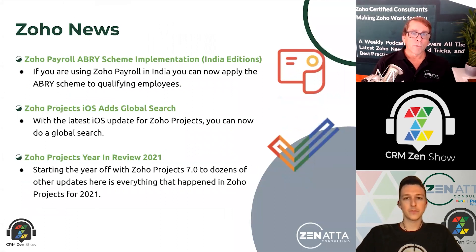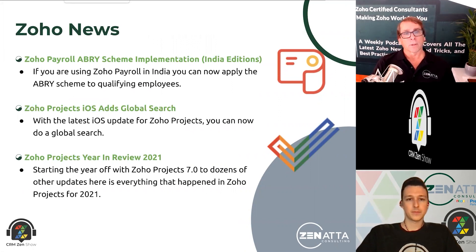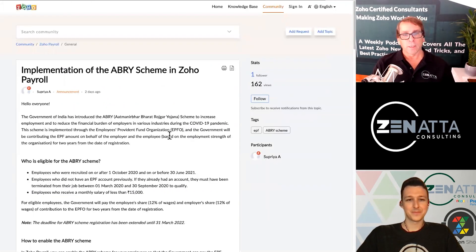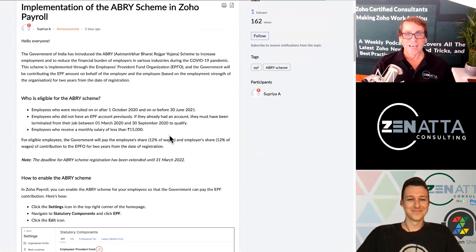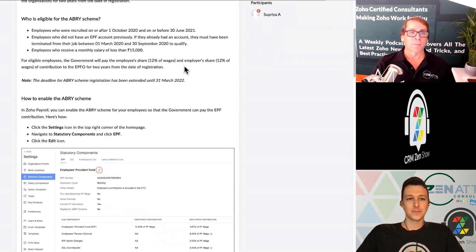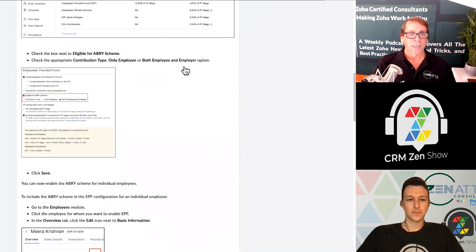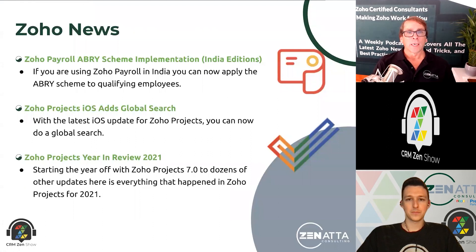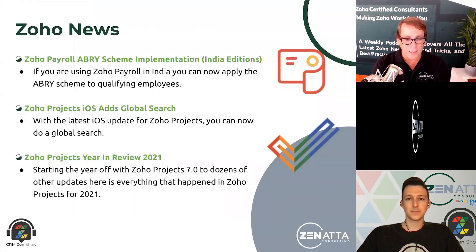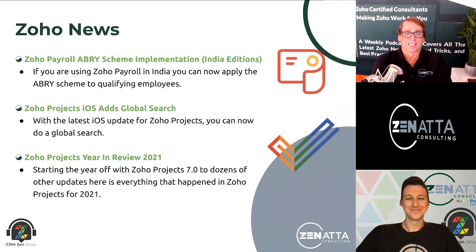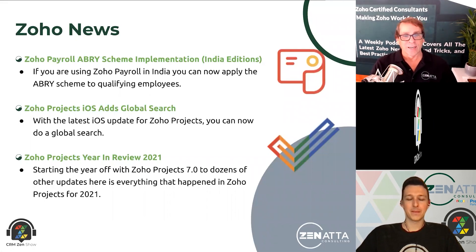One update for India: payroll now has the ABRI scheme implementation. If you're in India and you're doing payroll, the ABRI scheme is now supported — it has to do with when employees were hired and how much they make. Zoho Payroll is a nice application; it's only available in three states in the US and is in beta for seven others. Wherever Zoho has employees in the US is pretty much where payroll is, as well as in India.